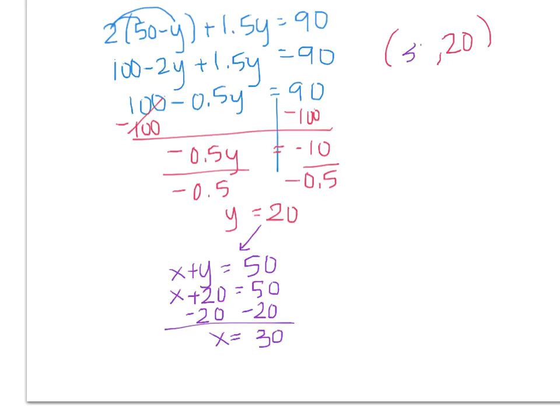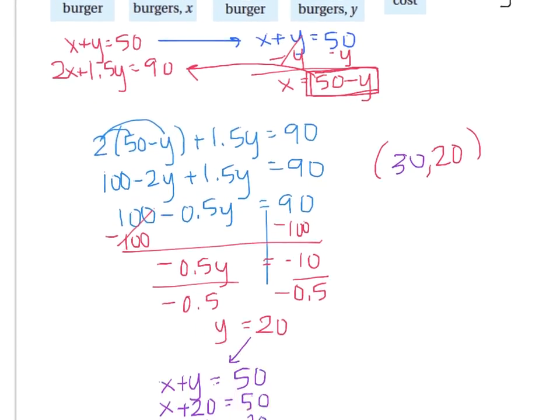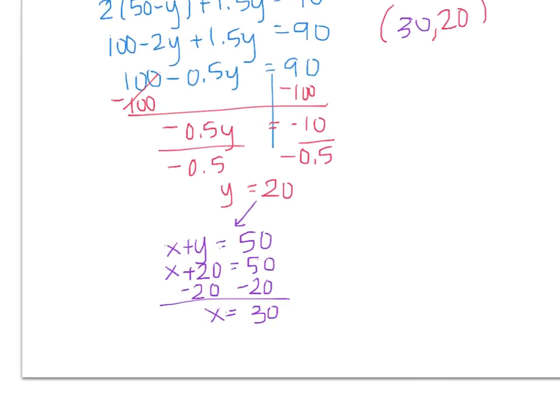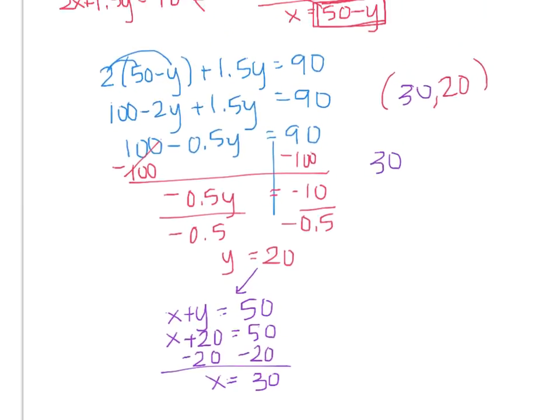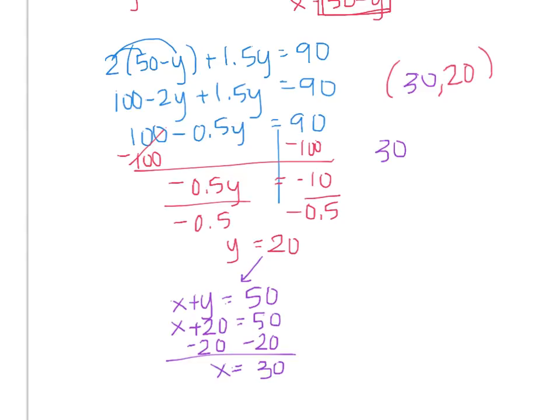But you're not going to write 30 comma 20 because that's not really the best way to write it because it was a word problem. The question said, well it didn't say anything, you had to read it, find the number of turkey burgers and the number of veggie burgers. So I should write it in words like they gave it to me. So the best answer is going to say 30 turkey burgers and 20 veggie burgers.